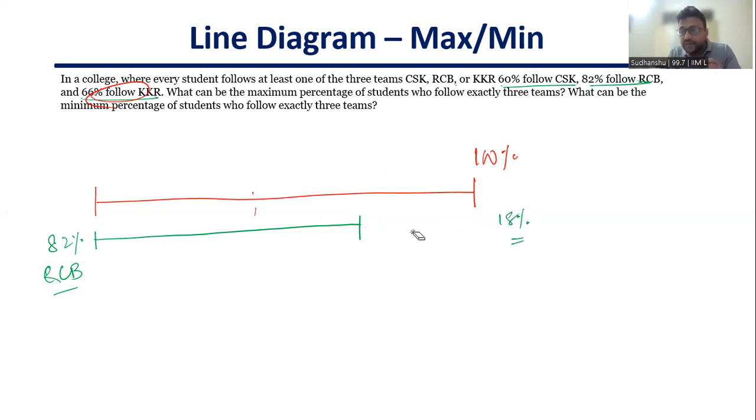I can't do something like this because I have to make sure that this vacant space has to be filled. How do I fill this vacant space and maximize the alignment wherein I have all the three being followed by maximum number of people? Think about it. I have 18% as the gap. I have to fill this gap from CSK, which is 60%, and KKR, which is 66%.